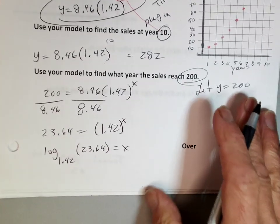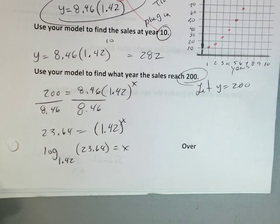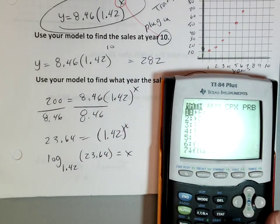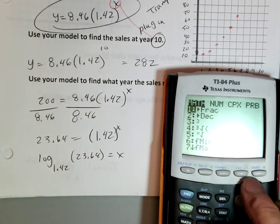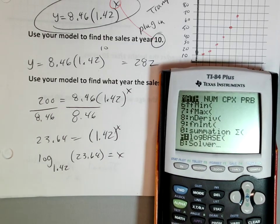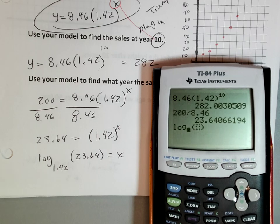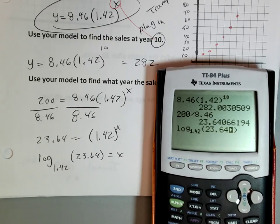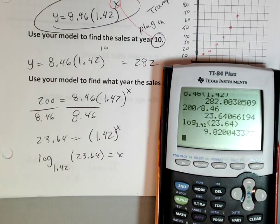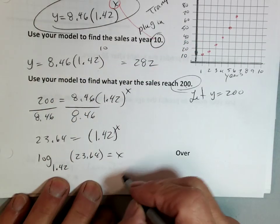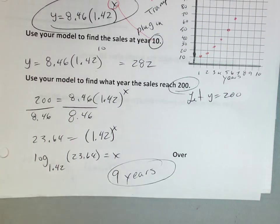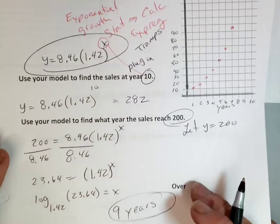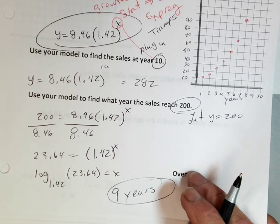Now the calculators can do this. I can go to my math, and I'm looking for that log base button. Log base, everybody with me? Enter. Now the base I want is 1.42 of my 23.64, and just let the calculator do the work. I get about 9, about 9.02. We'll just round to 9. So it's going to take 9 years. Not too bad. You guys are going to let the calculator do the work for you. Guess and check always works, but sometimes guess and check is a long way.